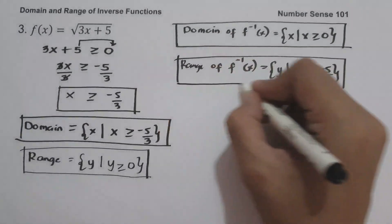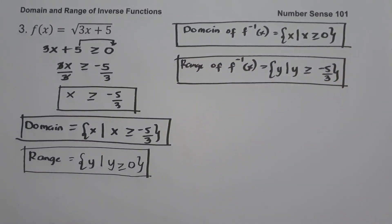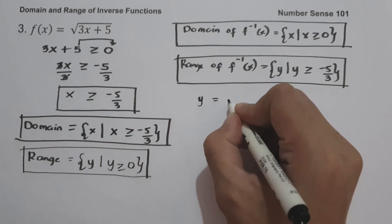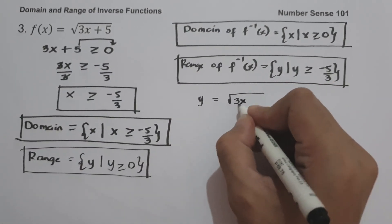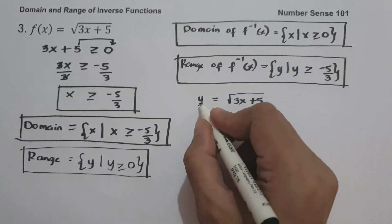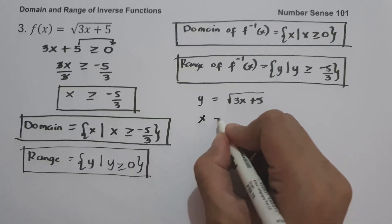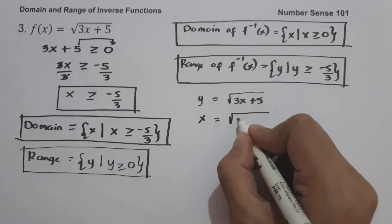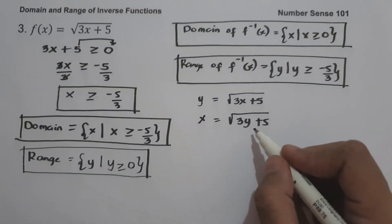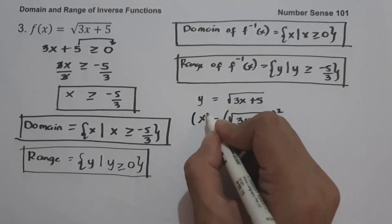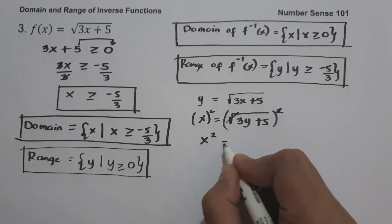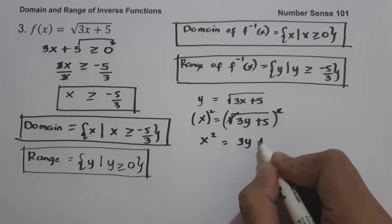To find the inverse, let us have y equals the square root of 3x plus 5. Interchanging x and y gives x equals the square root of 3y plus 5. Solving for y, we square both sides to get x squared equals 3y plus 5.